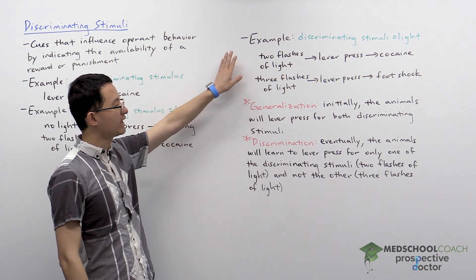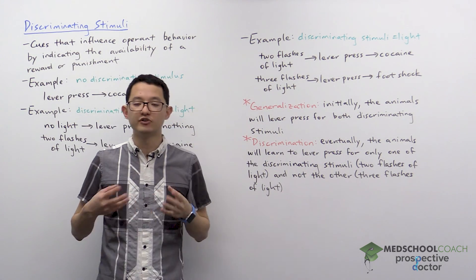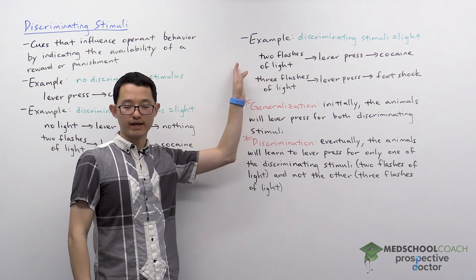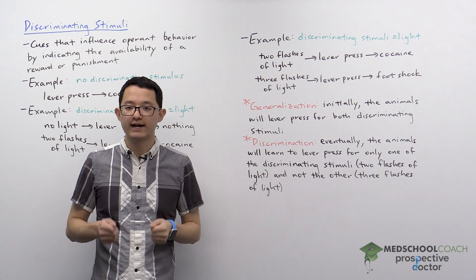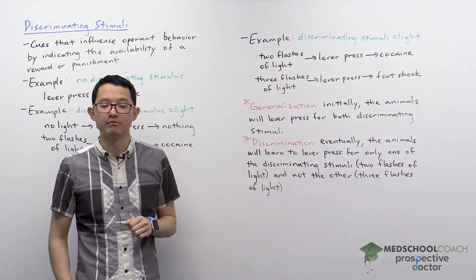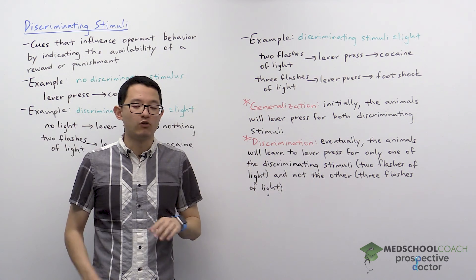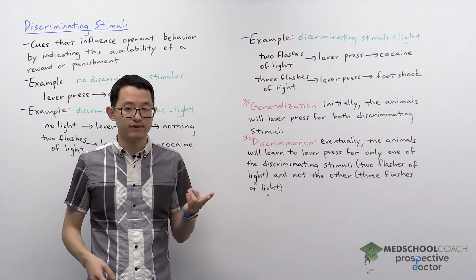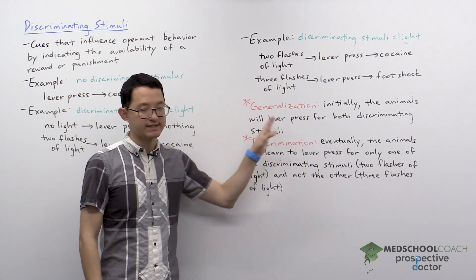In this example, we're going to have two different types of discriminating stimuli. In one case, if there are two flashes of light and the rat presses a lever, they're going to get cocaine. However, if the experimenter presents three flashes of light and the rat pushes the lever, the rat is going to get a foot shock, which is aversive because it's painful. Initially, the animals are just going to lever press for either discriminating stimulus — whether it's two flashes or three flashes, the rat is going to press the lever. This is what we call generalization.